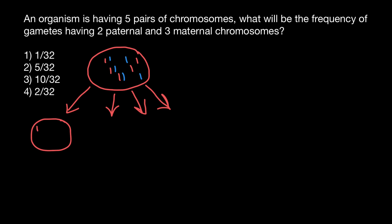Let's say the first chromosome is paternal. For chromosome number two, by random chance, it's going to be maternal. Then paternal, paternal, and maternal — so three paternal and two maternal chromosomes from each pair. Chromosomes are not arranged in pairs in the cell and float randomly inside the nucleus. You just have to understand that gametes would inherit just one chromosome from each pair and would thus be haploid. Different combinations are possible.